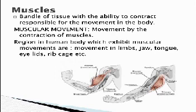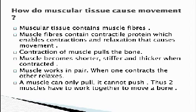Muscles are bundles of tissue with the ability to contract, responsible for movement in the body. Muscular movement is movement by the contraction of muscles. Regions in the human body that exhibit muscular movements include the limbs, jaw, tongue, eyelids, and ribcage. Muscular tissue contains muscle fibers with contractile proteins that enable contraction and relaxation, causing movement. Contraction of a muscle pulls the bone; the muscle becomes shorter, stiffer, and thicker when contracted. Muscles work in pairs — when one contracts, the other relaxes. A muscle can only pull, not push; thus two muscles must work together to move a bone.